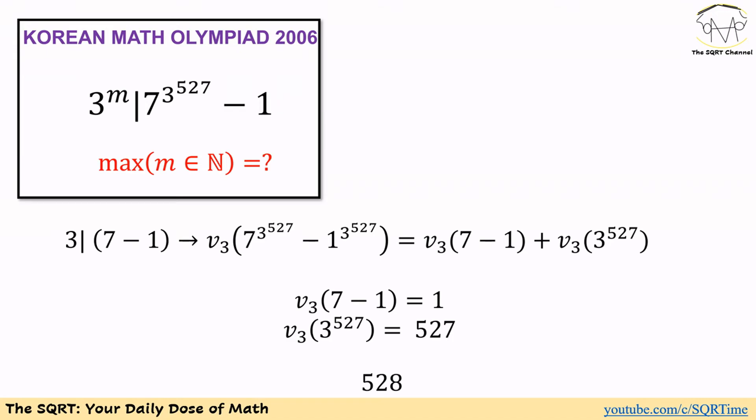We also know 3 divides 3 to the power of 527. Obviously, 3 to the power of 527 divides 3 to the power of 527 too. So the maximum power of 3 that divides 3 to the power of 527 is going to be 527.